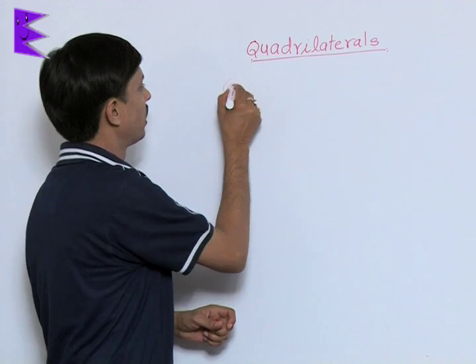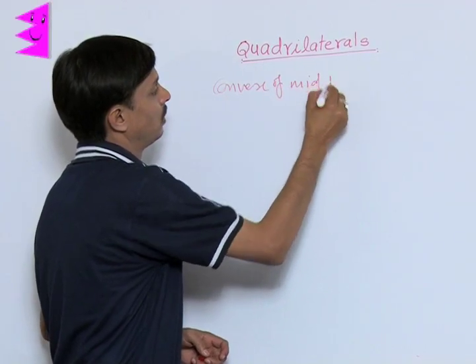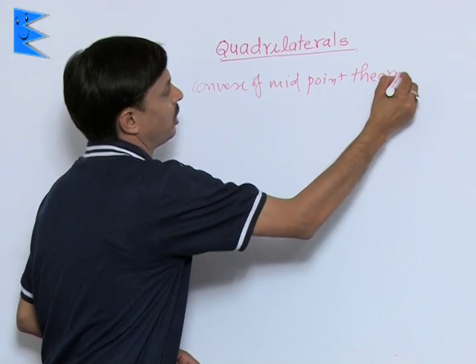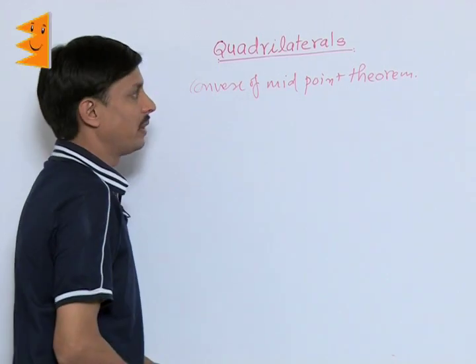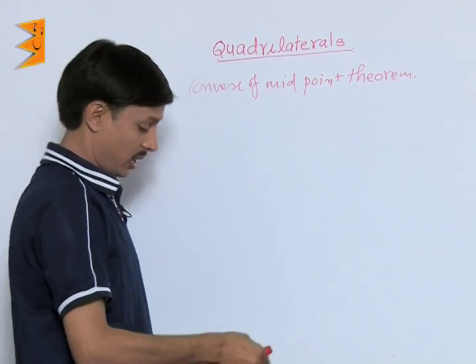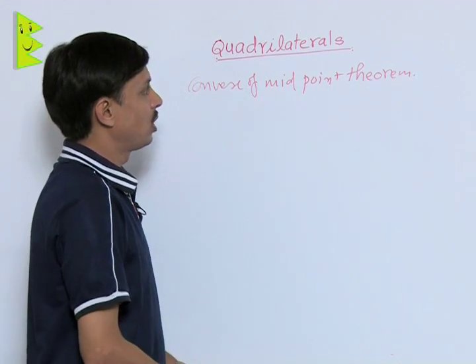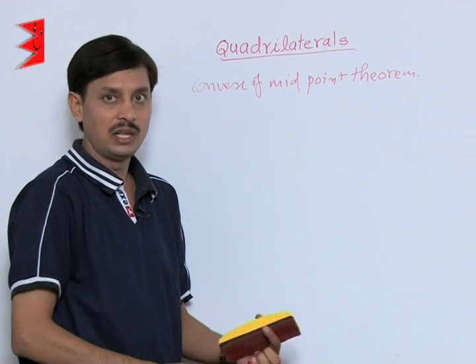What is the converse of midpoint theorem? As you know about the midpoint theorem, the midpoint theorem states that if a line segment joins the midpoints of any two sides of a triangle, then it is parallel to and half of the third side.